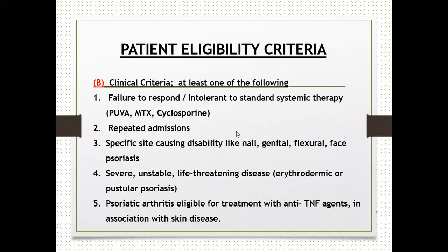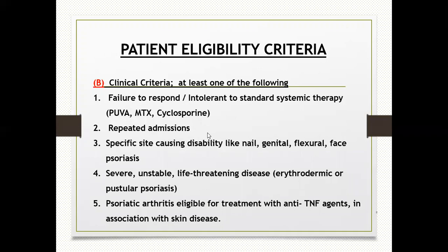Criteria B includes: failure to respond or intolerance to standard systemic therapy like PUVA, methotrexate, or cyclosporine; repeated admissions; specific site involvement causing disability such as nail, genital, flexural, or facial psoriasis; severe unstable or life-threatening disease like erythrodermic or pustular psoriasis; or psoriatic arthritis eligible for treatment with anti-TNF-α in association with skin disease. If any of these clinical criteria are fulfilled, the patient can be placed straight on a biological agent.